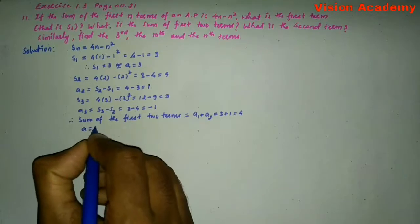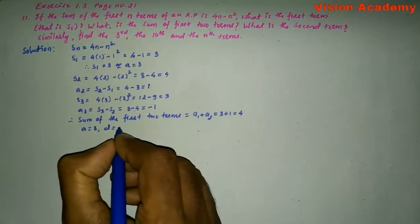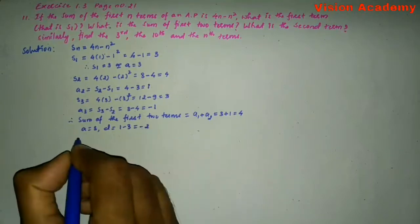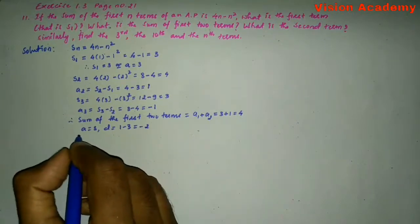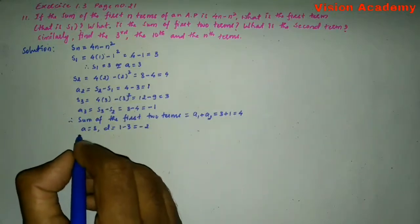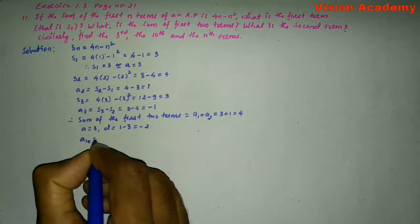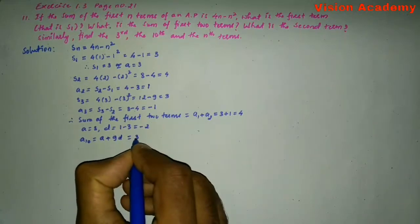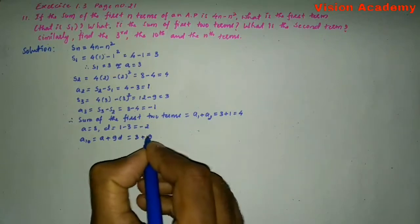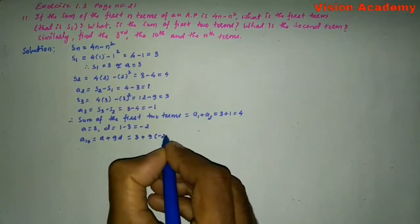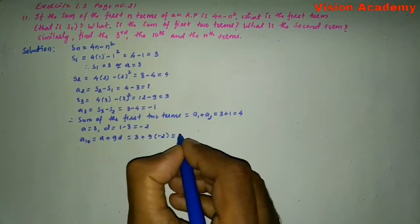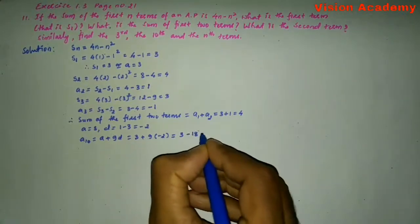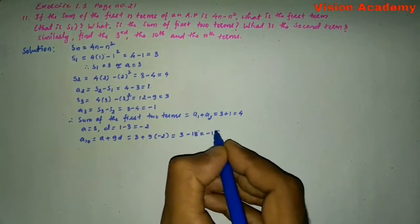Here, A is equal to 3 and the common difference D is equal to 1 minus 3, which is equal to minus 2. We need to find the 10th term. A10 is equal to A plus 9D, which is 3 plus 9 into minus 2. A10 is equal to minus 15.